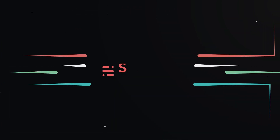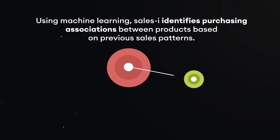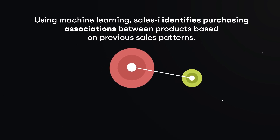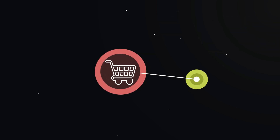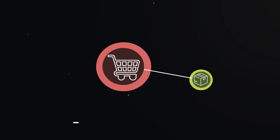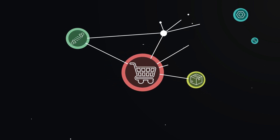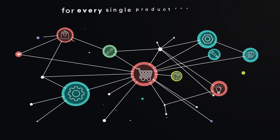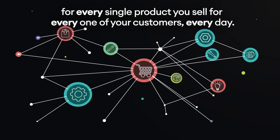And that's where SalesEye comes in. Using machine learning, SalesEye identifies purchasing associations between products based on previous sales patterns. When a customer buys a product, SalesEye will calculate the probability of them ordering an associated product, giving the salesperson the opportunity to secure that new revenue — for every single product you sell, for every one of your customers, every day.